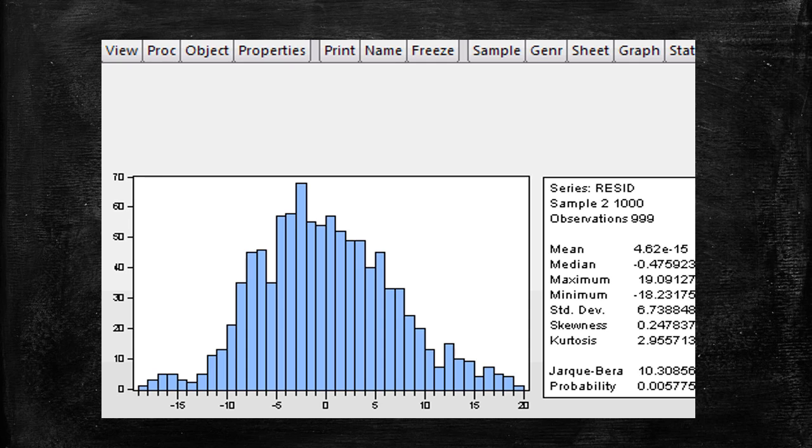In this test, the null hypothesis states that the residual distribution is normal. At the 1% significance level, we can reject the hypothesis that the residual distribution is not normal.